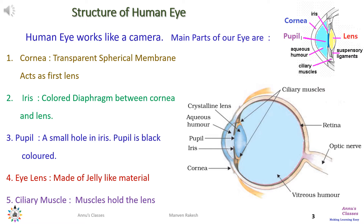The main parts of the eye are as follows. The cornea is the first transparent spherical membrane and acts as the first lens for the eye — most of the refraction happens at this stage. Just behind the cornea is the aqueous humor, and behind the aqueous humor is the iris, which is the most visible part of the eye. The color of the eye — blue, gray, etc. — is because of the color of the iris.